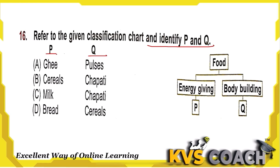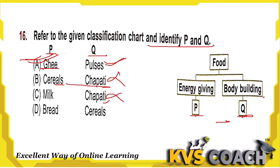Question 16: Refer to the given classification chart and identify P and Q. P is energy-giving food and Q is body-building food. Checking options: ghee is energy-giving and pulses are body-building — option A looks right. Cereals and chapati — chapati is not body-building food, so wrong. Milk and chapati — also wrong. Bread and cereals — bread gives energy but cereals for body-building is not accurate. Option A — ghee and pulses — is the right answer.